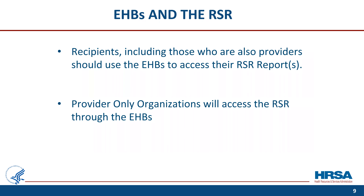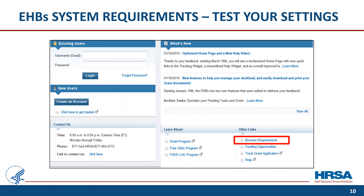Recipients, including those who are also providers, will use the EHBs to access their RSR recipient and provider reports. Now let's take a look at how to make sure your browser is set up to allow you to experience the full functionality of the EHBs. This is a screenshot of the login page for the EHBs. On the lower right corner of the screen, find the browser requirements link, shown here in the red box. Click this link, outlined in red, to verify that your computer settings meet the EHBs requirements.